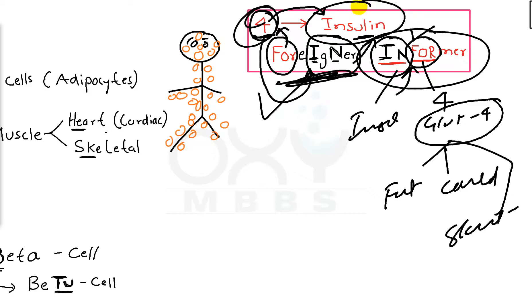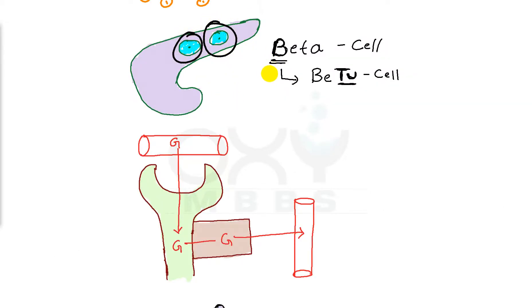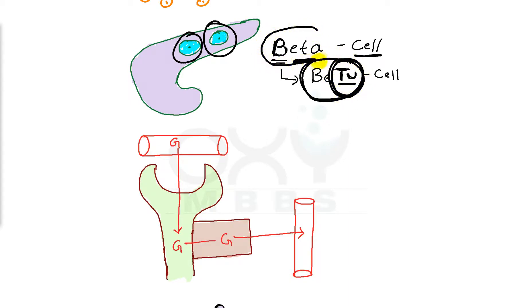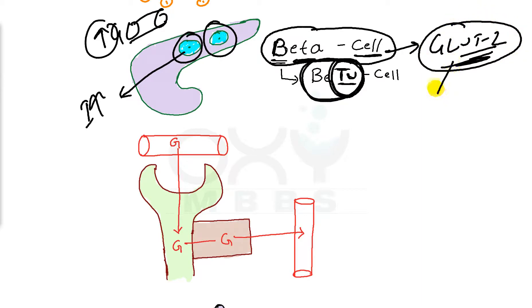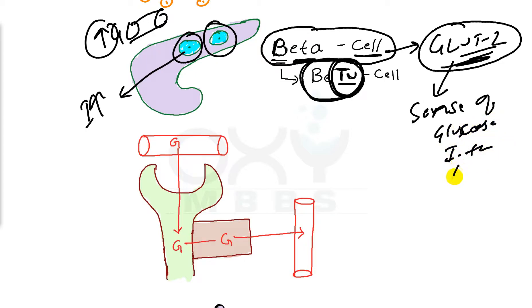Coming to the beta cells of the pancreas — pronounce beta as 'betu.' The word betu itself contains number two, meaning beta cells of the pancreas have GLUT2 transporter. The function of GLUT2 in beta cells is just to sense the blood glucose level. If blood glucose is high, insulin will be secreted. So GLUT2 in beta cells is purely for sensing glucose in the blood.